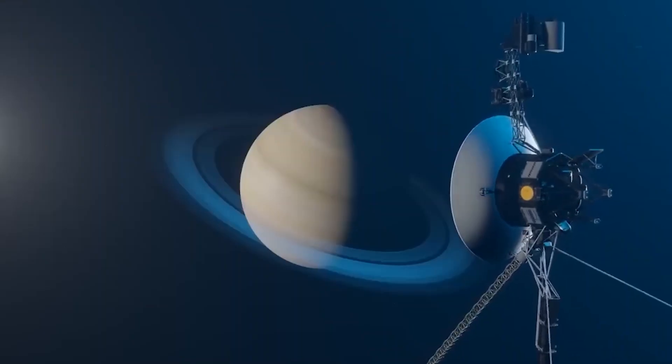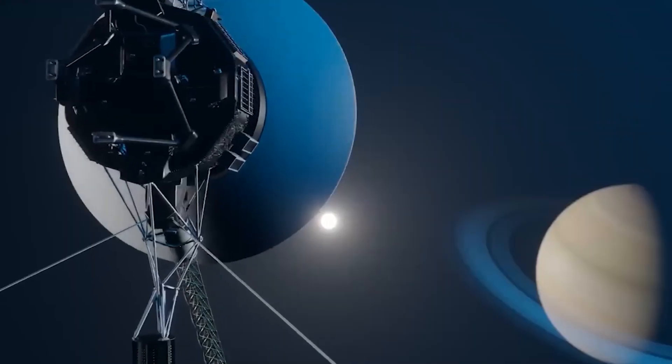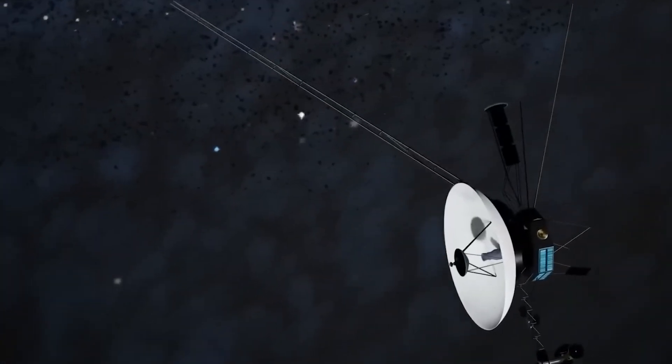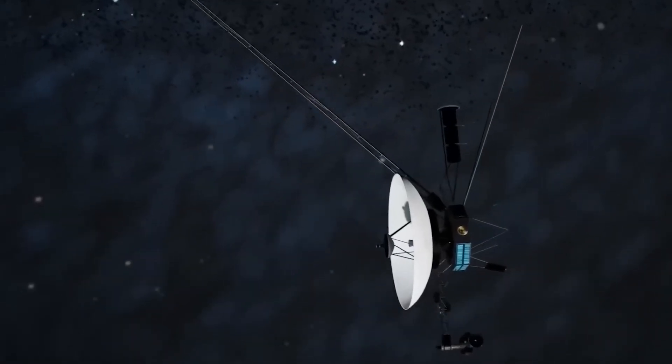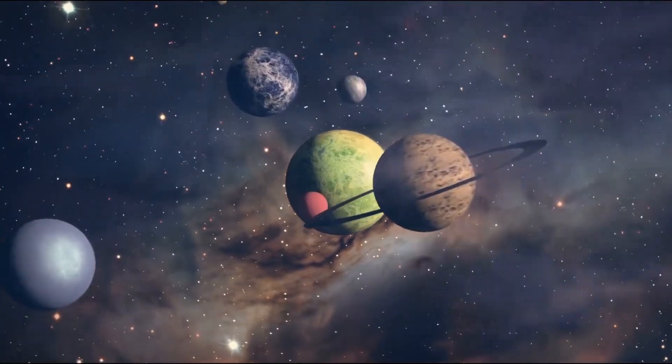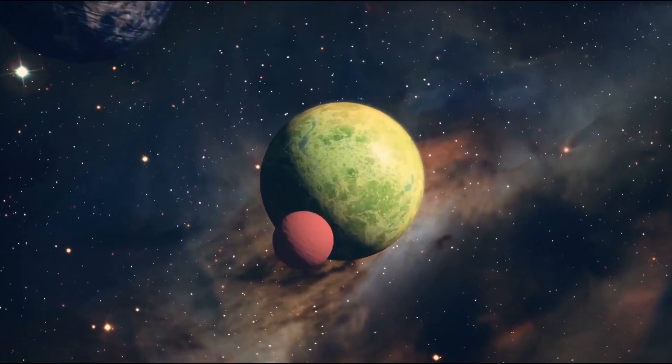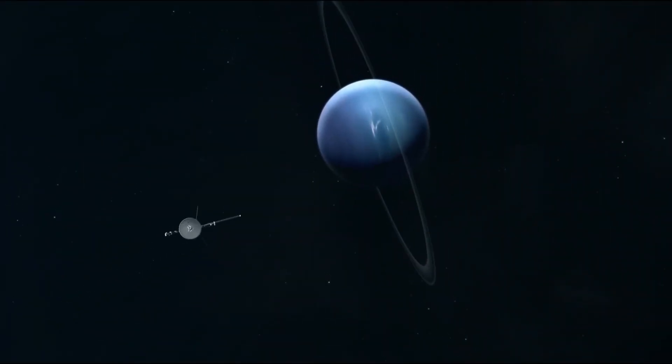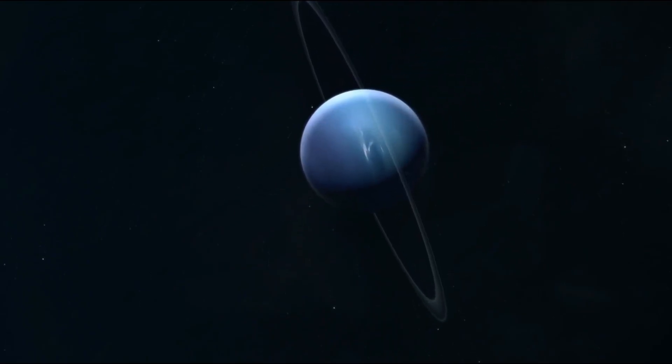Voyager 2, in particular, was the first spacecraft to approach Uranus in 1986 and Neptune in 1989, becoming the only probe that visited those planets, surprising scientists with astonishing findings in previously unexplored territories.